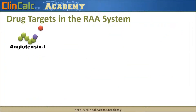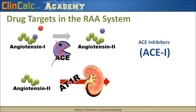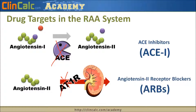Why does the RAS system matter? The reason is that it produces a great target for drug therapy. Going back to angiotensin I and the angiotensin-converting enzyme, we can block this step using an ACE inhibitor. Similarly, if angiotensin II is produced, we can block its ability to trigger the AT1 receptor using angiotensin II receptor blockers. ACE inhibitors block the conversion from angiotensin I to angiotensin II, while ARBs block angiotensin II from triggering sodium and water reabsorption in the kidney.